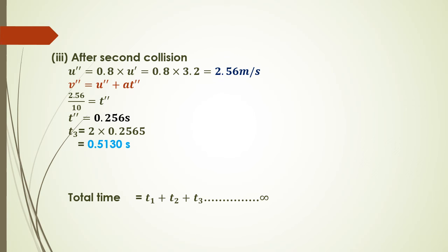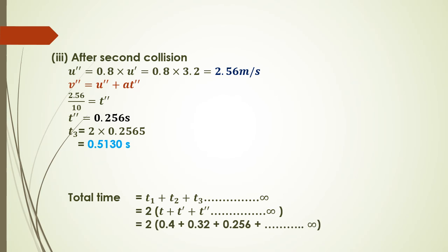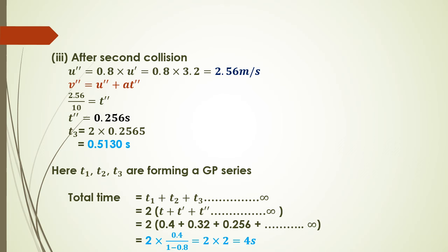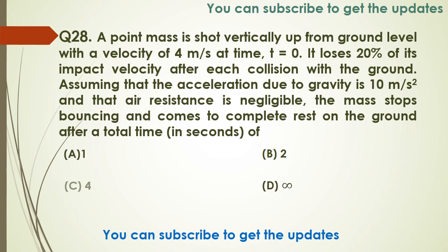The total time equals t1 + t2 + t3 + ... to infinity, which is a GP. Using the sum to infinity formula S∞ = A / (1 - R), where A is the first term in the half-bounce series = 0.4 seconds and the common ratio R = 0.8, and multiplying by 2 for up-and-down motion, we arrive at a total time of 4 seconds. So Option C is the correct answer.